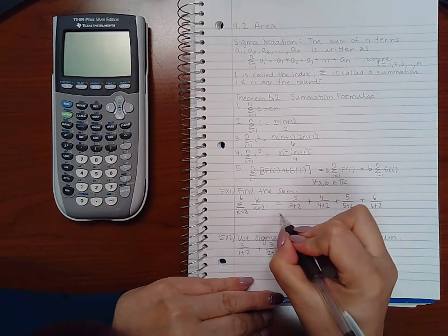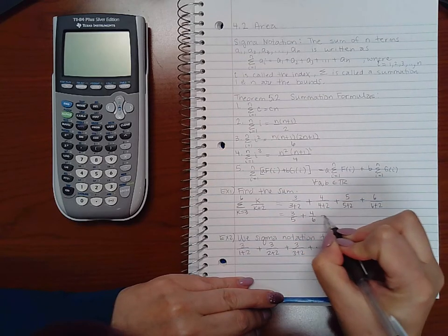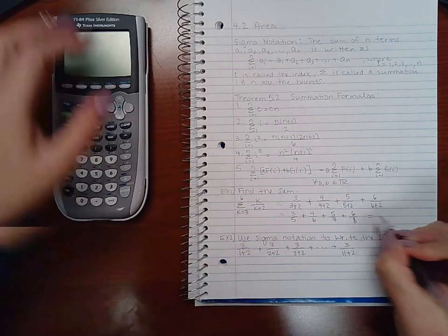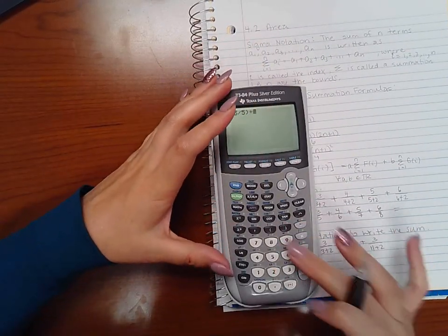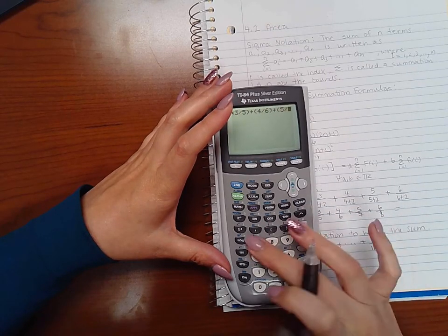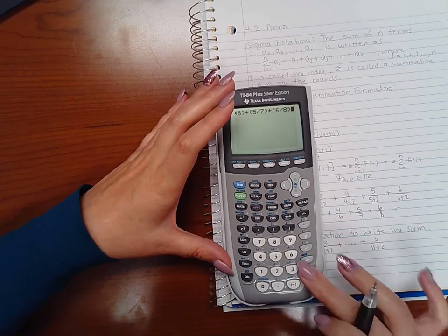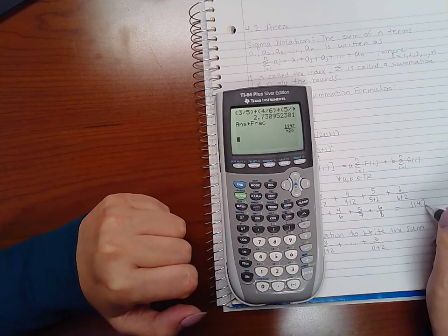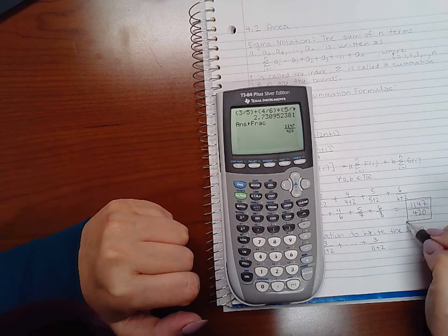So I'm just going to compute this. I end up with three over five plus four over six plus five over seven plus six over eight, and that I can type in the calculator. Let's go ahead: three over five plus—you could reduce four over six if you want to, but since I'm using the calculator I don't necessarily need to; the calculator will reduce four over six and six over eight for me. Put it in its fraction form, and we get one and forty-seven over four twenty. And this is the summation.